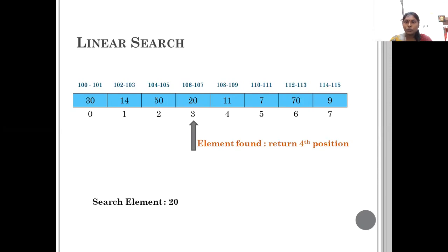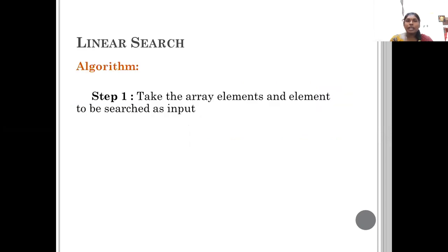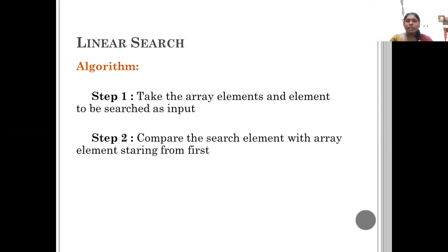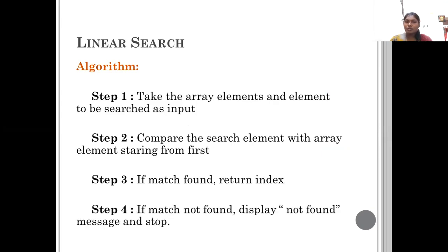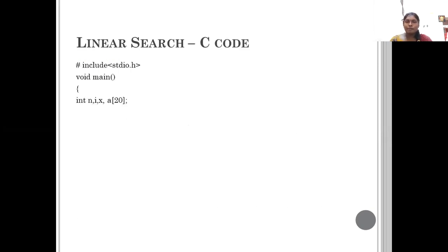Since the index starts from 0, we return the position as the index plus 1. This element is found in the fourth position. Now we are going to write an algorithm for it. We take all the inputs and compare the search element with the array element starting from the first. If the match is found, return the index. If the match is not found, return the not found message.